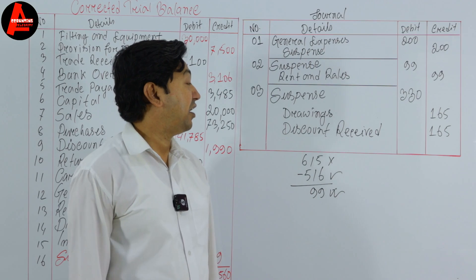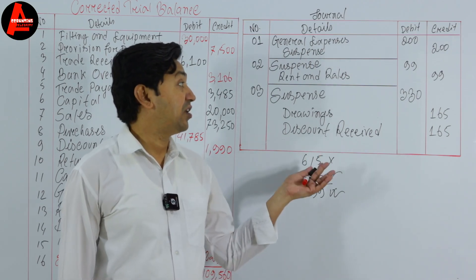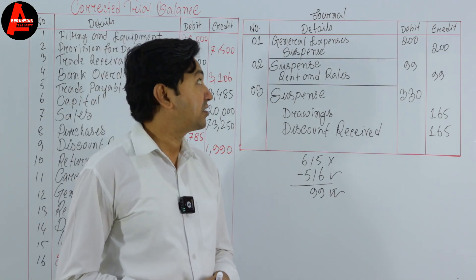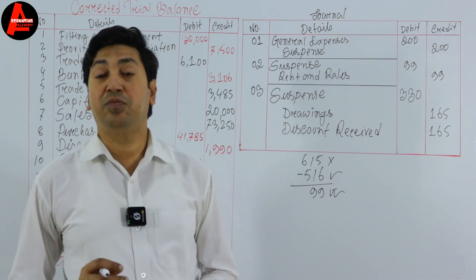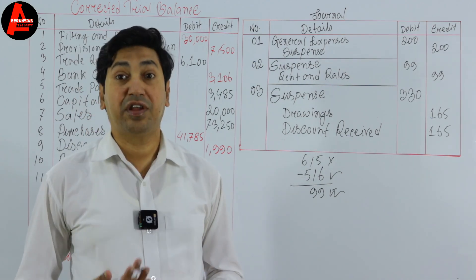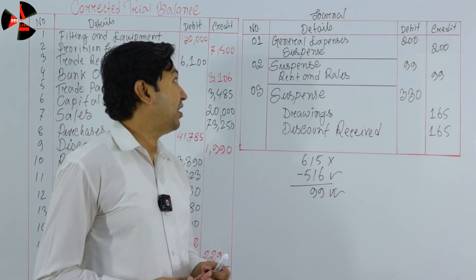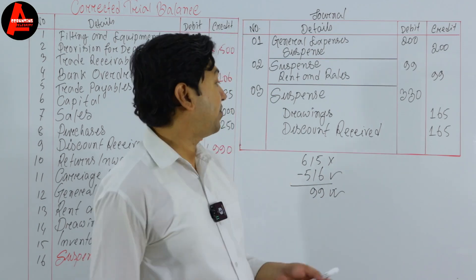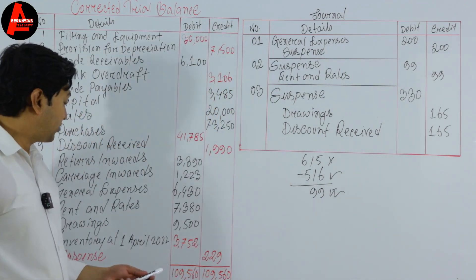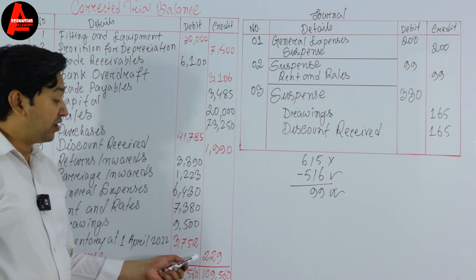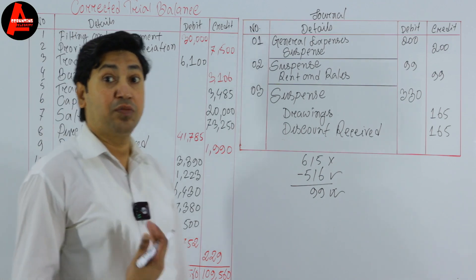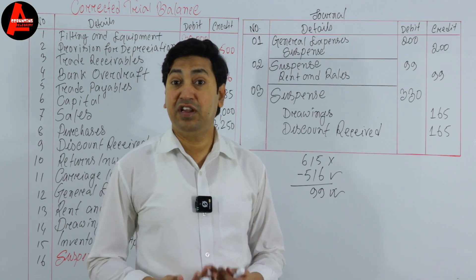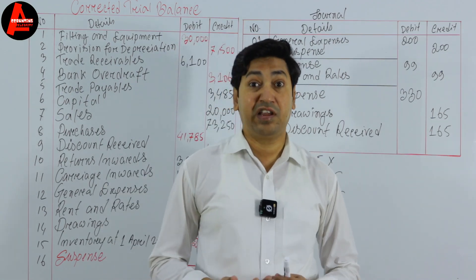This is how you need to rectify the errors. In this tutorial I did not show you how to write the narratives — I have other videos on this topic, you can check my channel, and I will put the playlist in the description for your convenience. In our next tutorial, the third one, I will show you how to prepare a suspense account. The difference we see on the trial balance is $229, and I will show you how to place that in a suspense account.